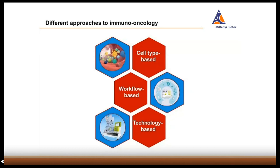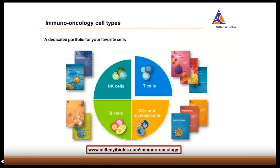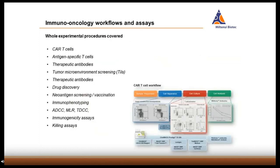Finally, our immuno-oncology products can be grouped into their respective technology categories like cell separation, cell culture, or flow analysis. Let's have a closer look at the different ways to assess our immuno-oncology portfolio. We have dedicated cell separation, cell culture, and analysis products for the most important immune cell types in immuno-oncology research. NK cells, T cells, B cells, dendritic cells, and other myeloid cells are all well covered with very specific solutions. On our website www.miltenibiotech.com/immuno-oncology, you will find dedicated chapters containing all products suited for the respective cell types, as well as extensive marketing material ranging from brochures to protocols to webinars. A more workflow-oriented approach groups our products into research fields like CAR T cells, antigen-specific T cells, therapeutic antibodies, or the tumor microenvironment.